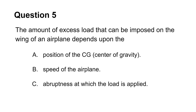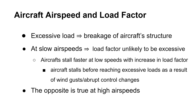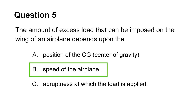This question tests your knowledge of the relationship between load factor and airspeed. Recall that flying at higher speeds may induce excessive load on an aircraft. At high airspeeds, flight controls or wind gusts may increase the load factor beyond safe limits. This makes choice B the answer. Choice A is incorrect because the position of the center of gravity affects balance and stability, but does not affect the total load that the aircraft's wings can support. Choice C is incorrect too, because abrupt control changes do not limit load either.